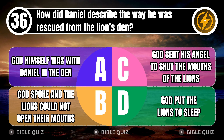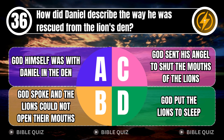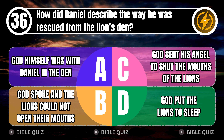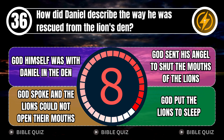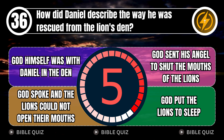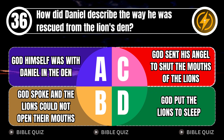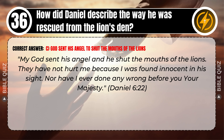Question 36: How did Daniel describe the way he was rescued from the lion's den? A. A god himself was with Daniel in the den. B. God spoke and the lions could not open their mouths. C. God sent his angel to shut the mouths of the lions. D. God put the lions to sleep. Correct answer: C. God sent his angel to shut the mouths of the lions. 'My God sent his angel, and he shut the mouths of the lions. They have not hurt me, because I was found innocent in his sight. Nor have I ever done any wrong before you, your majesty.' Daniel 6 verse 22.